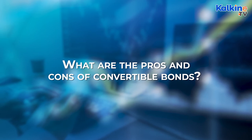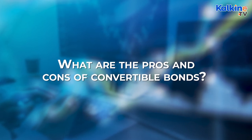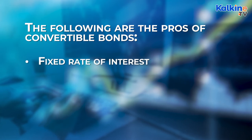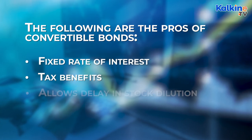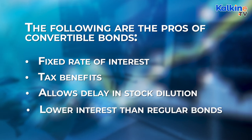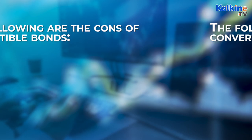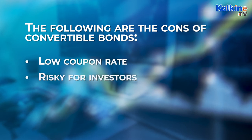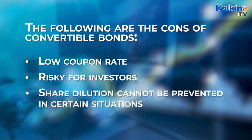So what are the pros and cons of convertible bonds? As with anything in life, there are advantages and drawbacks. The pros of convertible bonds include: they offer a fixed rate of interest, tax benefits, they allow for a delay in stock dilution, and they have a lower interest rate than regular bonds. As for the cons, they include a low coupon rate, they can be risky for investors, and share dilution cannot be prevented in certain situations.